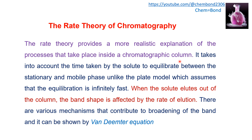Rate theory takes into account the time taken by the solute molecule to equilibrate between the stationary and mobile phase, unlike the plate model which assumes equilibrium is infinitely fast. When the solute elutes out of the column, the band shape is affected by the rate of elution. Different rates of elution result in broadening of the band, which is explained by the Van Deemter equation.